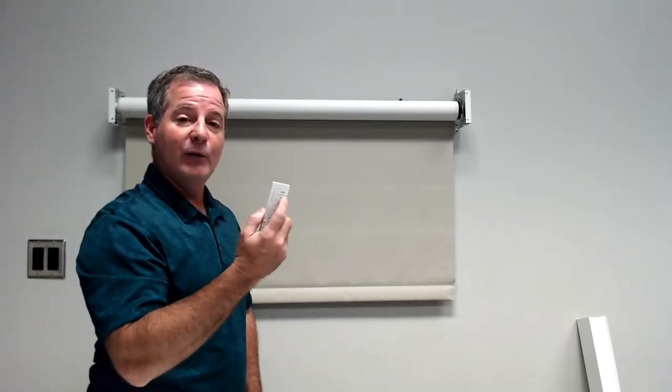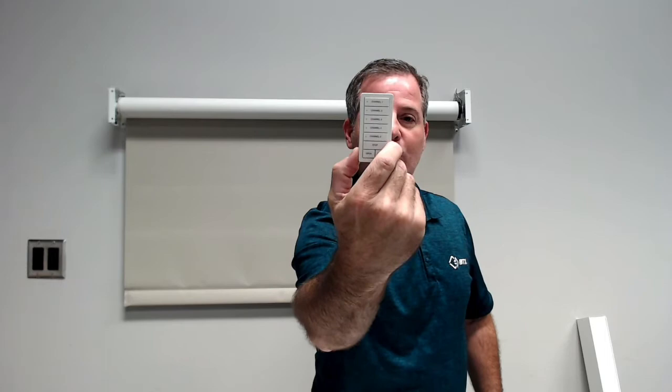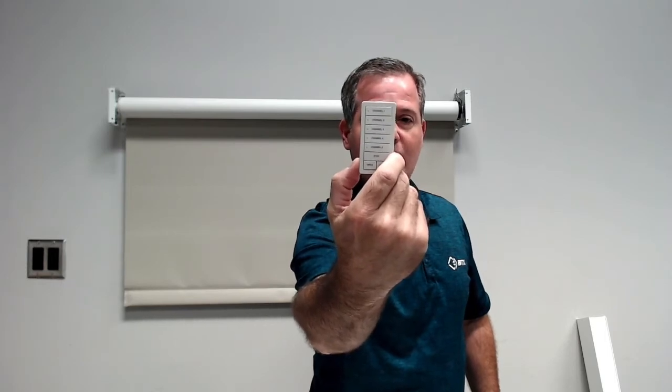Now if you want to add a remote control wall switch to it, which is this wall switch here, it's a five channel. You basically are going to choose the channel you would like to operate this particular unit on by hitting the button. So for example, channel one here, it's going to light up, and then you're going to hit open and close on the unit to pair it.